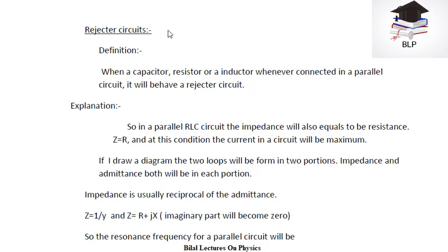Rejector Circuit is reciprocal and anti-parallel to that of Acceptor Circuit, because in Acceptor Circuit, capacitor, resistor, and inductor are connected in a series circuit. But in Rejector Circuit, capacitor, resistor, and inductor will be connected in a parallel circuit that will behave as a Rejector Circuit. So this is one reciprocal condition compared to that of Acceptor Circuit.